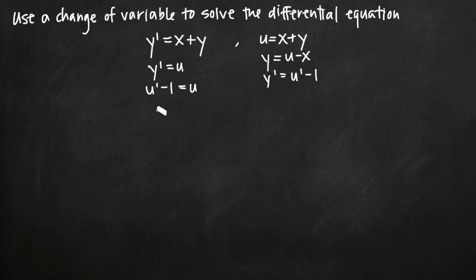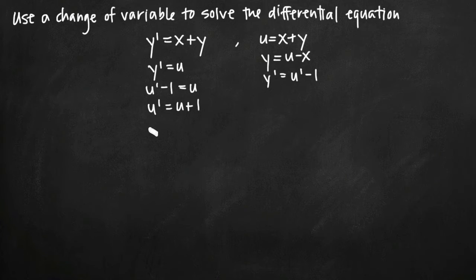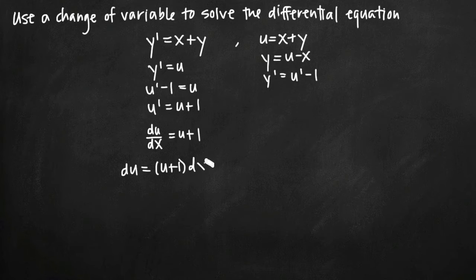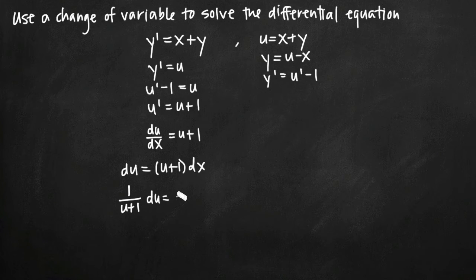We want to solve this for u'. We'll get u' equals u plus 1 when we add 1 to both sides. If we change the format of u' and call it du over dx, we get du over dx equals u plus 1. And now this is a separable differential equations problem that we can solve. We'll do so by multiplying both sides by dx and we'll get du equals u plus 1 times dx.